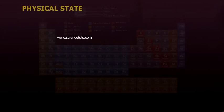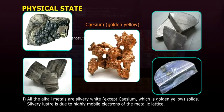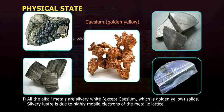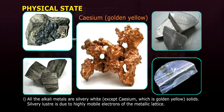1. All the alkali metals are silvery white, except cesium, which is golden yellow solids. Silvery luster is due to highly mobile electrons of the metallic lattice.